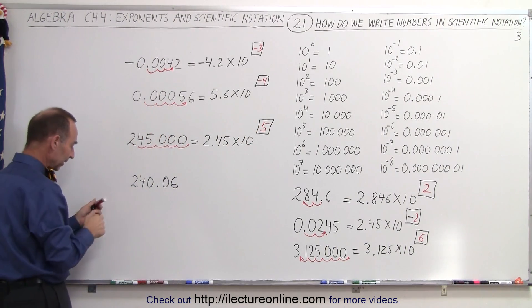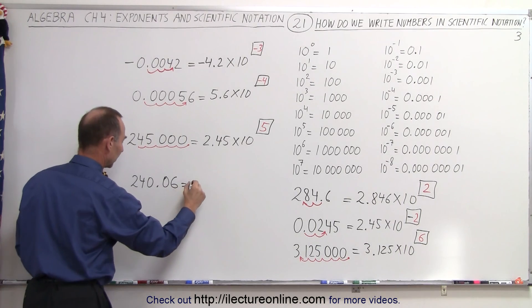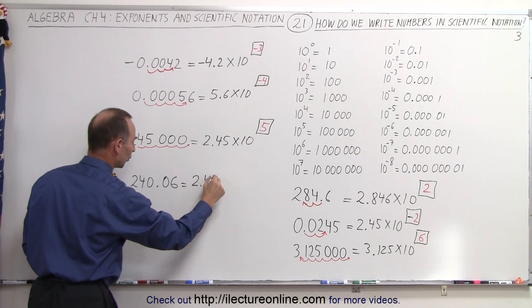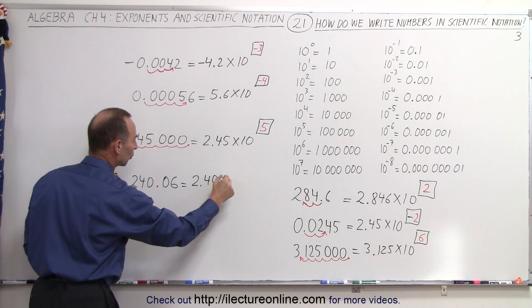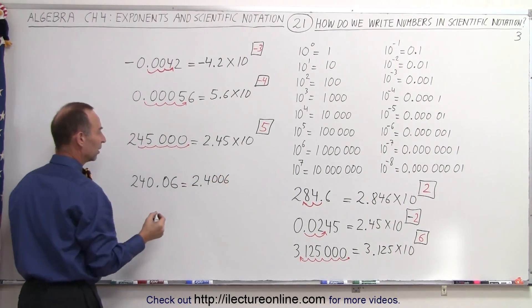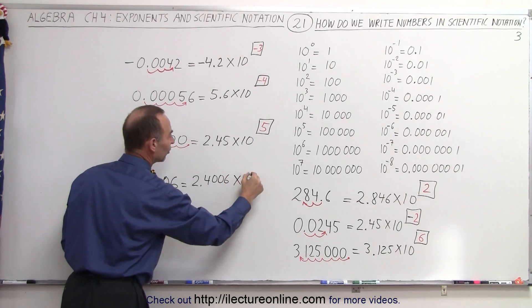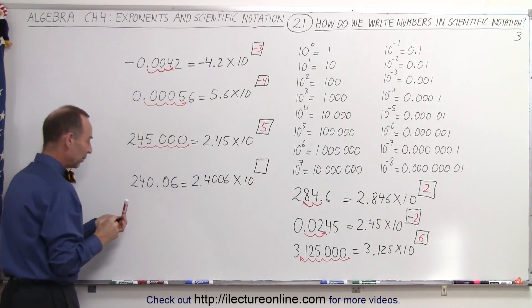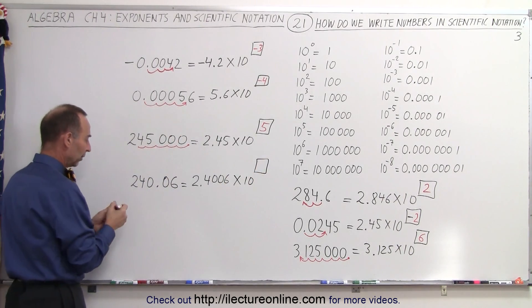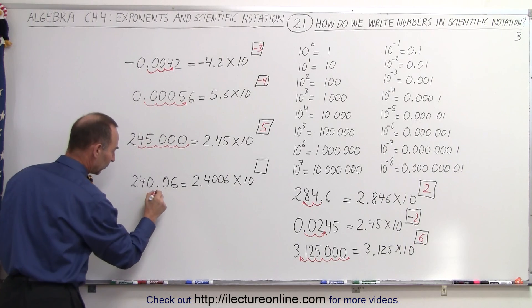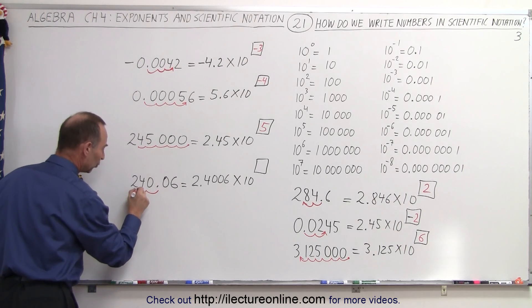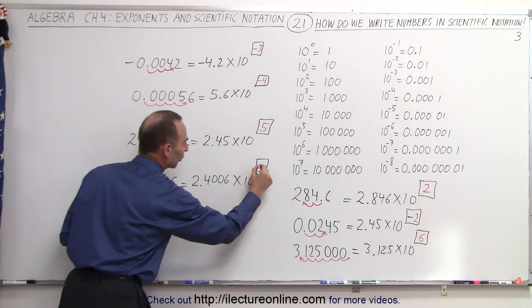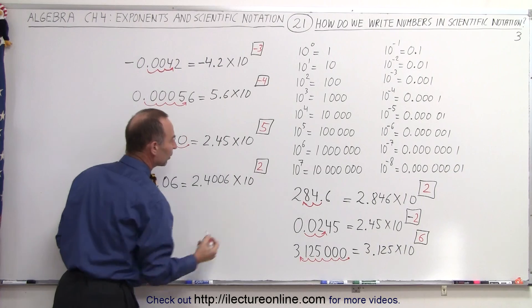And finally, here this is going to be written as 2.4006 times 10 to some exponent. And here we have to take the decimal place and move it 1, 2 spots to the left. So therefore, we need the number 2 there.